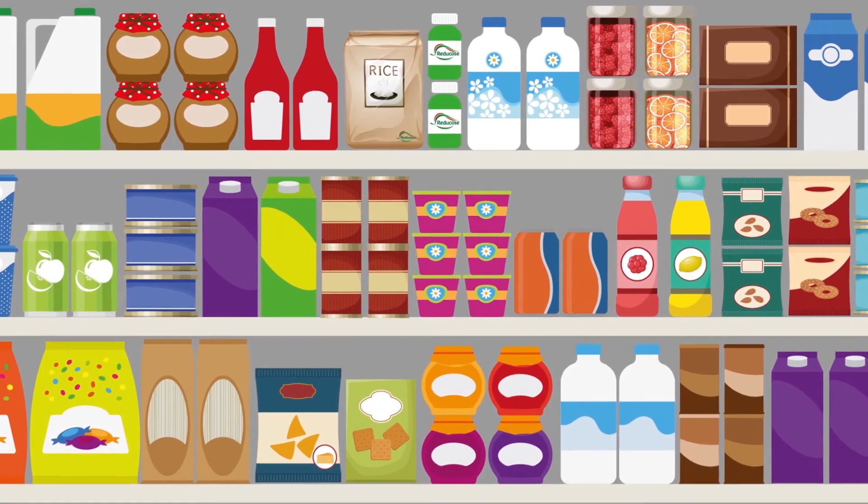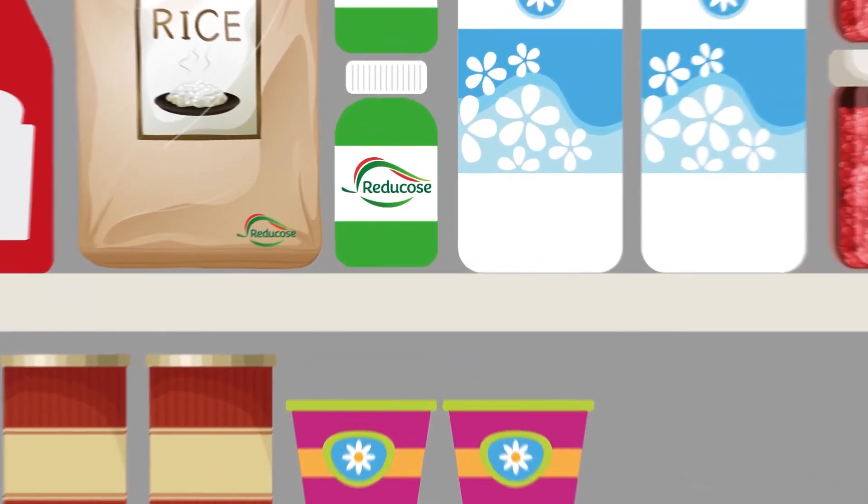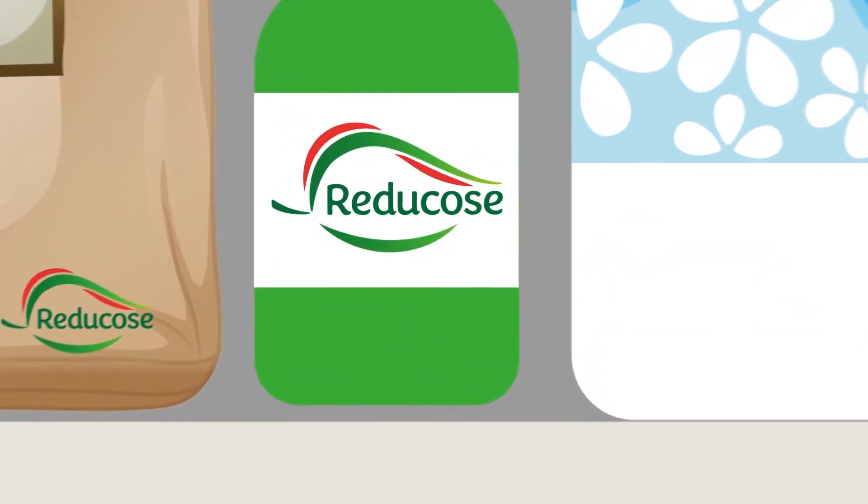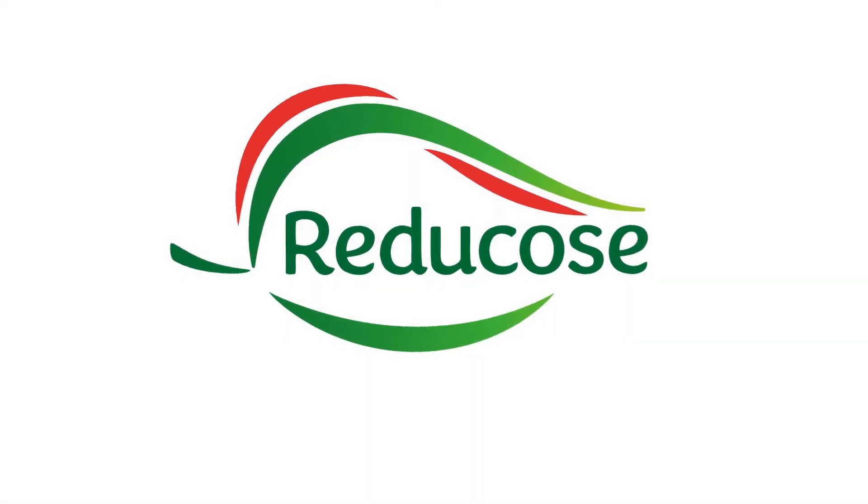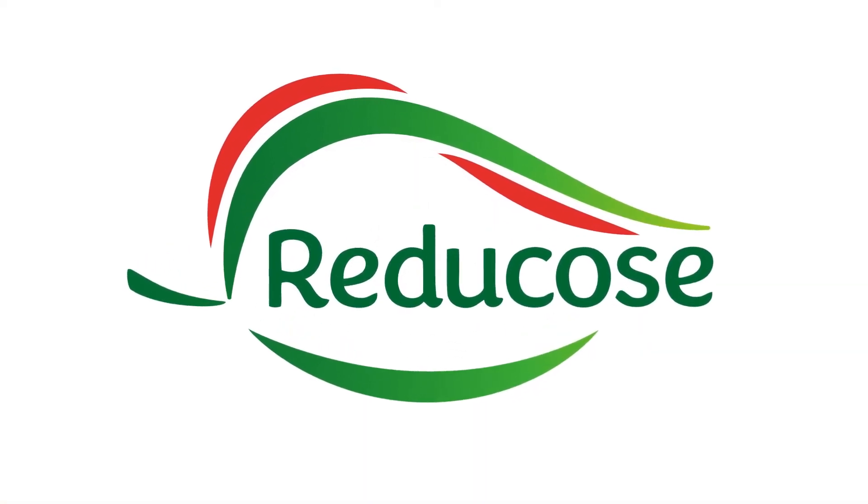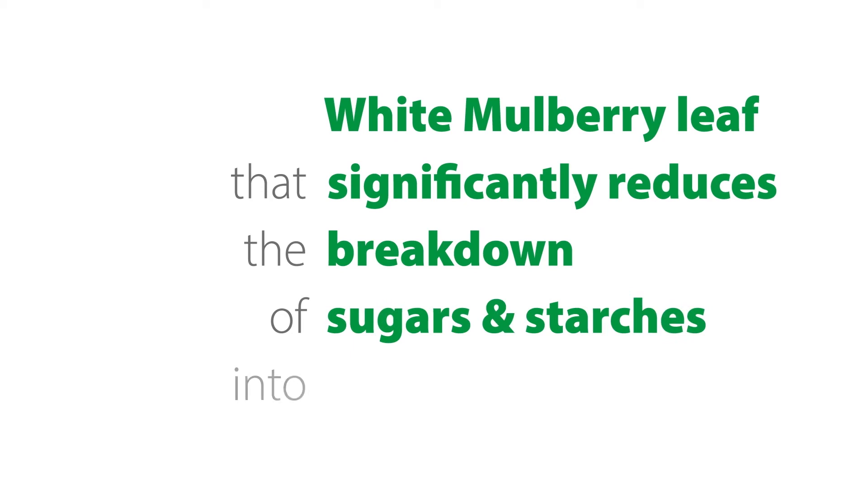But daily life can make it difficult to avoid excessive exposure to sugars and starches, and this is where Reducose offers a simple, natural solution. It's a water extract of white mulberry leaf that significantly reduces the breakdown of sugars and starches into glucose.